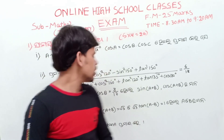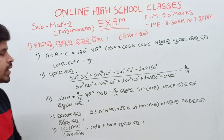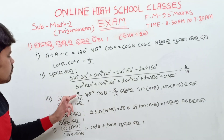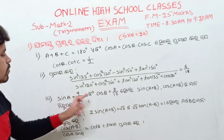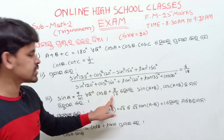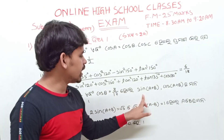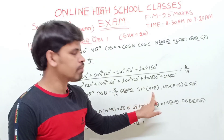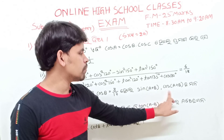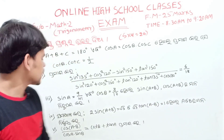sin A is equal to 9 by 41 and cos A is 8 by 17. Find sin(A+B). Next, find sin(A+B) alone.